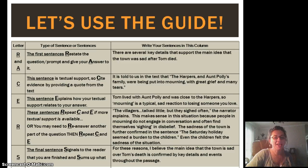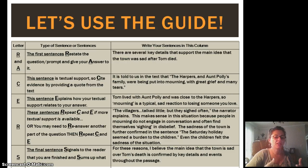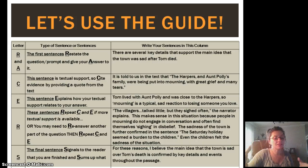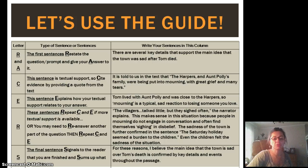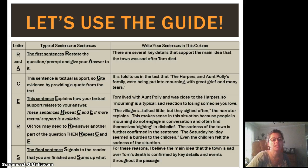We repeat that again: 'The sadness of the town is further confirmed in the sentence, the Saturday holiday seemed a burden to the children. Even the children felt the sadness of the situation' — a final explanation sentence. Then we move into our S sentence, and the final S sentence signals to the reader that you are finished and sums up what you wrote: 'For these reasons, I believe the main idea that the town is sad over Tom's death is confirmed by key details and events throughout the passage.'